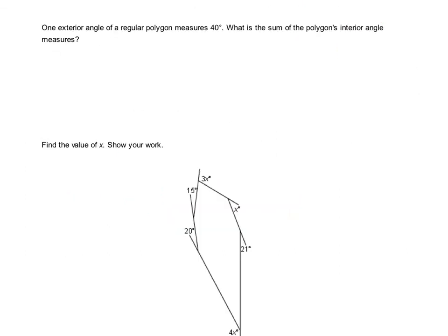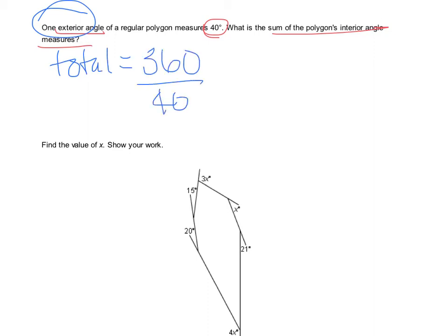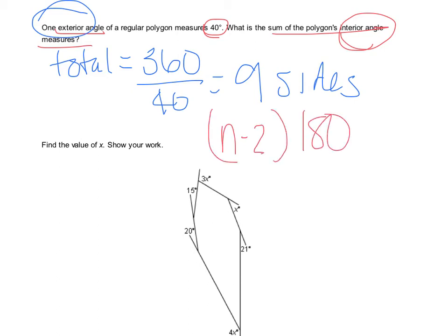If we know that one exterior angle of a polygon measures 40 degrees, what is the sum of the polygon's interior angle measures? If one exterior angle is 40, and all exteriors equal 360, I can do 360 divided by 40, which tells me there are 9 sides. Then using the formula (n minus 2) times 180, I do 9 minus 2 times 180, and I get 1260 degrees.